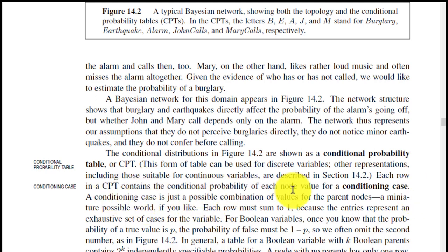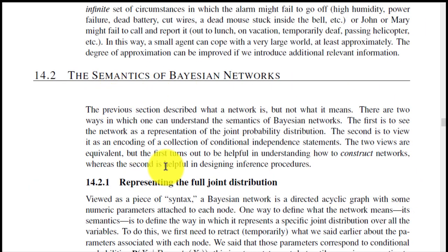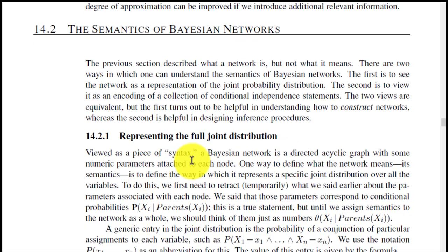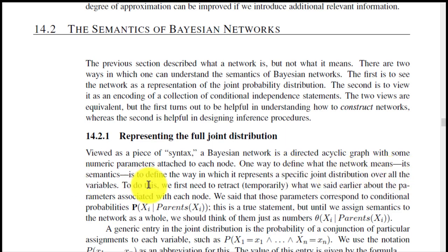The next point is semantics of Bayesian networks. The first point is representing the full joint distribution. Viewed as a piece of syntax, a Bayesian network is a directed acyclic graph with some numeric parameters attached to each node. One way to define what the network means — its semantics — is to define the way in which it represents a specific joint distribution over all the variables. To do this, we first need to retract temporarily what we said earlier about the parameters associated with each node.